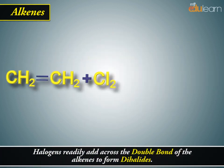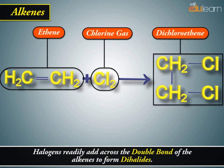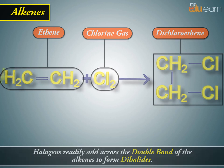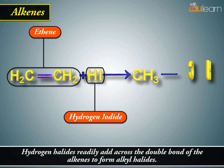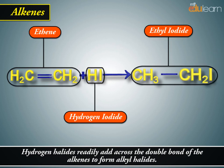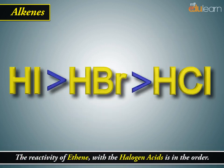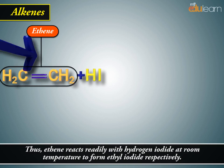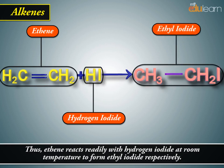Halogens readily add across the double bond of alkenes to form dihalides. Hydrogen halides readily add across the double bond of alkenes to form alkyl halides. The reactivity of ethene with the halogen acids follows a specific order. For example, ethene reacts readily with hydrogen iodide at room temperature to form ethyl iodide.